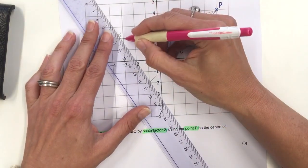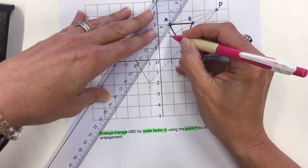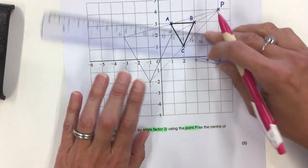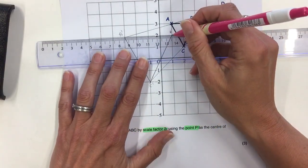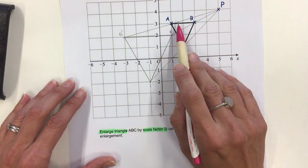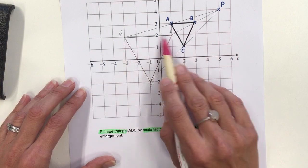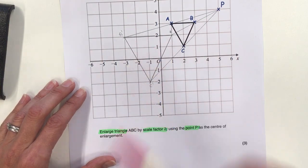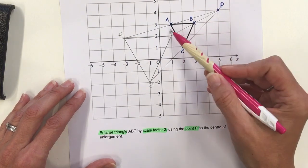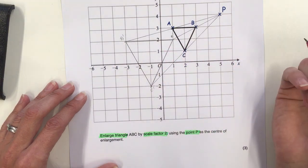Then the last thing is to join the three corners of the new triangle together. If we check, the original is two squares long and this should be four, which it is. So I've enlarged shape ABC from point P using ray lines and it's now twice as big.